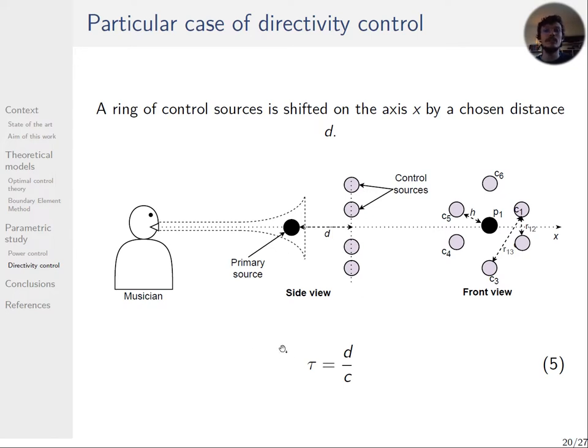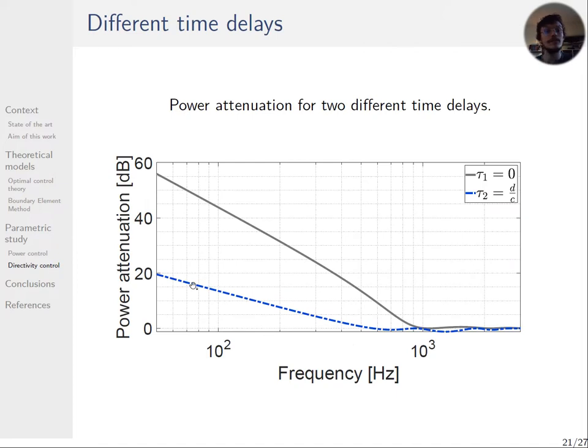So when a delay is added, the power attenuation becomes lower in low frequencies. There is an attenuation of 6 dB up to 250 Hz only. This is the result of the volume velocity calculation, which is not optimal anymore. But in that case, the directivity becomes cardioid.